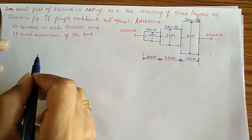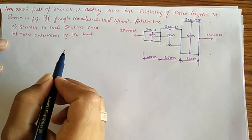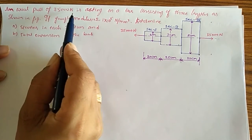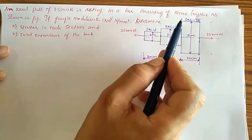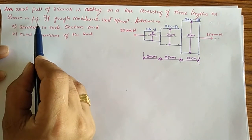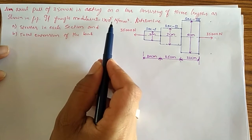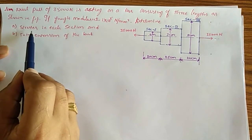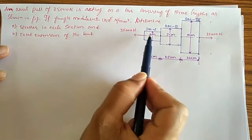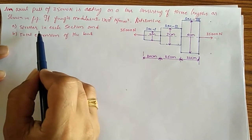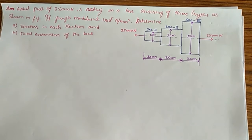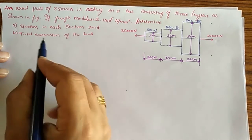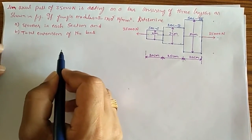Hi friends, today I am going to solve a problem on a stepped bar which is subjected to axial load. An axial pull of 35,000 Newton is acting on a bar consisting of three lengths as shown in the figure. We need to determine: number one, stresses in each section, and number two, total extension of the bar.